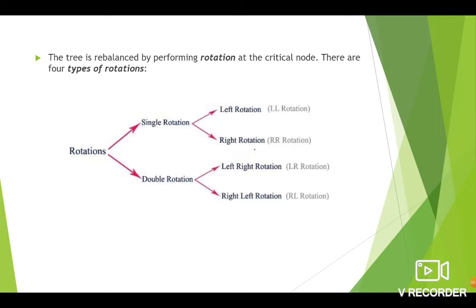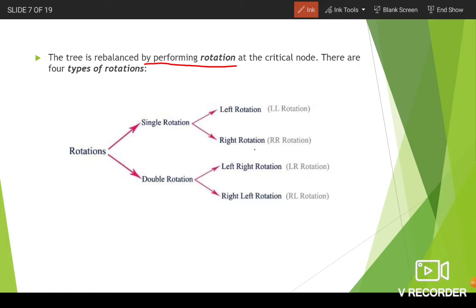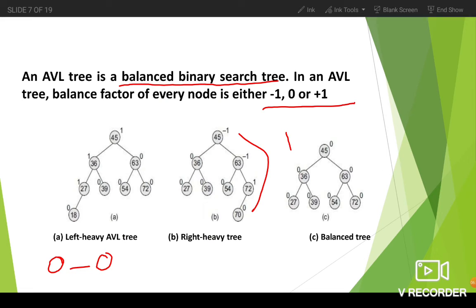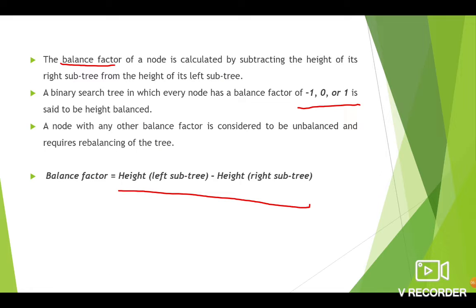The tree is rebalanced by performing rotation at the critical node. If the node is unbalanced — meaning its balance factor is not -1, 0, or +1 — then we call that node an unbalanced node and you have to rebalance it. For that, we use an operation called rotation. The node for which the balance factor is violated is called the critical node, and you have to perform the rotation on that node. We have four types of rotation. Rotations are mainly classified into two types: single rotation and double rotation.